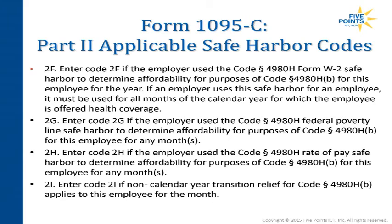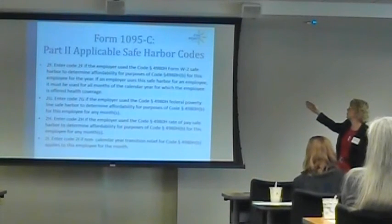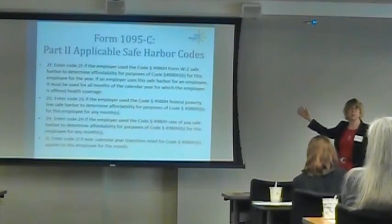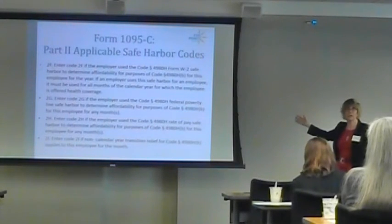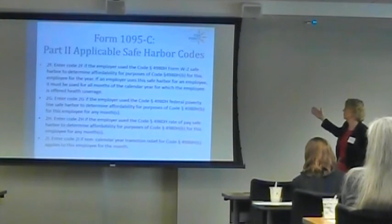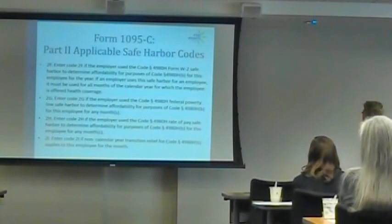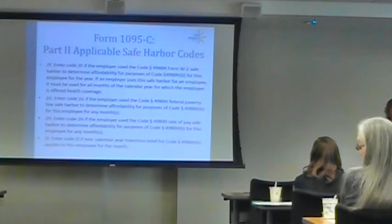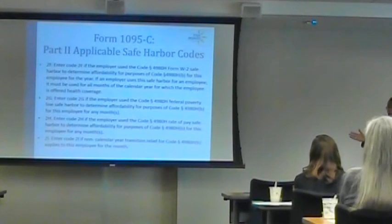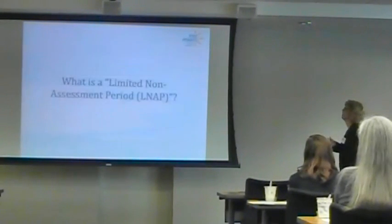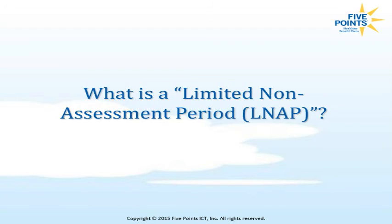2F is used if the employer used the W-2 safe harbor to determine affordability — this can overlap with 2C since both may apply, but 2C typically trumps. 2G is the federal poverty level safe harbor. 2H is the rate of pay safe harbor. 2I applies if non-calendar year transition relief applies to that employee — meaning you haven't fully moved into healthcare reform compliance in your 2015 plan year yet.